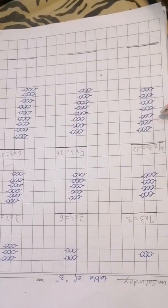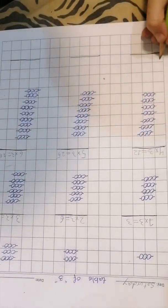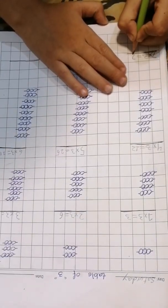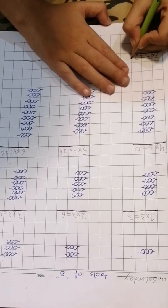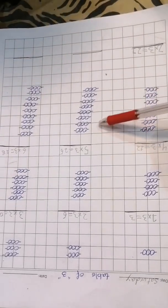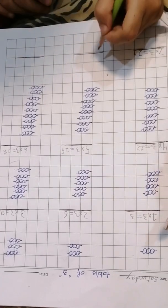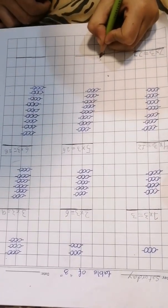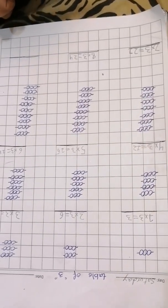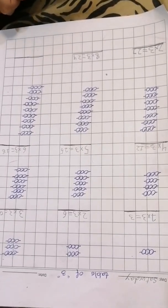How many threes are here? Seven. Seven threes. Seven threes are twenty-one. Yes, good job. Twenty-one. How many threes are here? Eight threes. Eight threes are twenty-four. Yes. How many threes are here? Nine threes. Nine threes are... ninety? No — you can count.